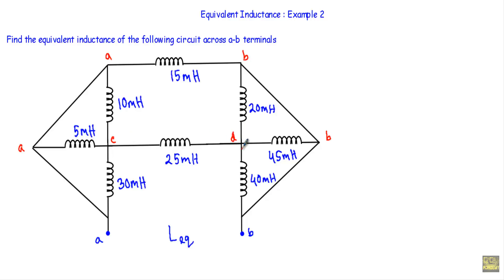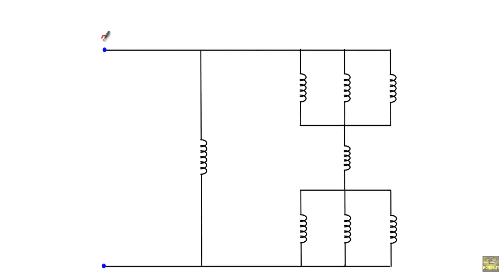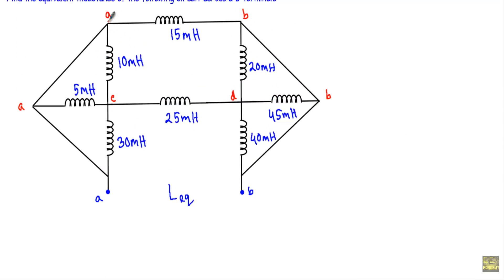Now I will draw a simplified equivalent circuit of this structure so that we can easily calculate the equivalent inductance of the given circuit. I will start my simplification from the A point and go up to the B point. So first, this is our A point, this is our B point, this is our C point, and this is our D point.